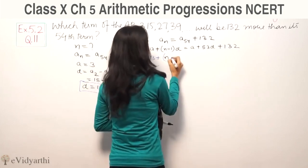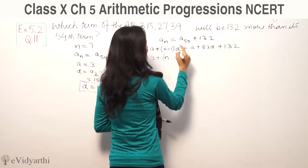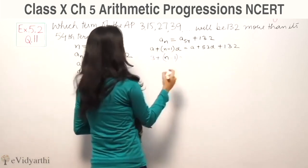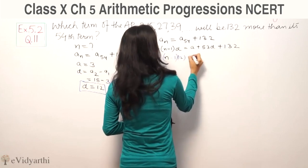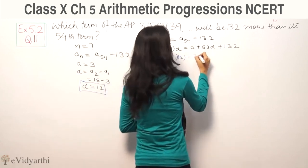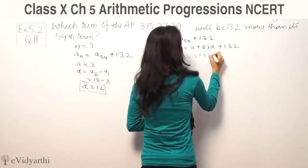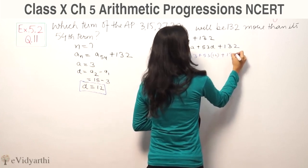For a54, we write a plus 53d plus 132. Substituting the first term 3 and d equals 12.